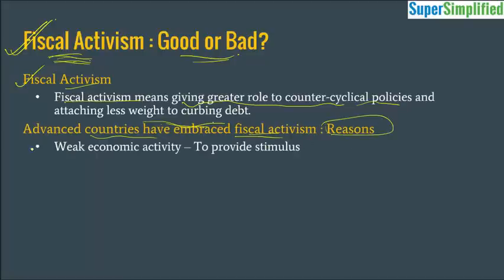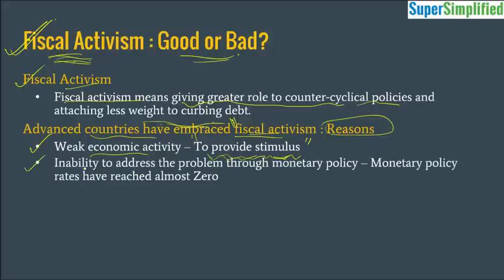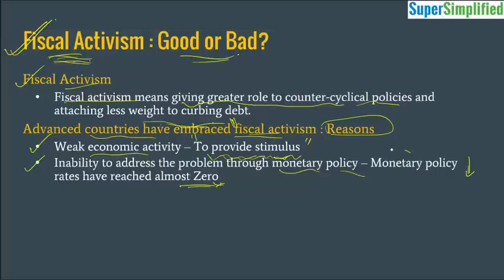Advanced economies adopted fiscal activism for two reasons. The first reason is weak economic activity — to provide stimulus, they use fiscal activism as a tool. The second reason is the inability to address the problem through monetary policy. Generally, a central bank reduces the repo rate so interest rates come down and people take more loans. But there is a limit — rates can only go down to zero, and some countries have even gone into negative policy rates, meaning if you take a loan, they give you interest in return. Since monetary policy is not working to stimulate growth, they have moved on to fiscal activism.